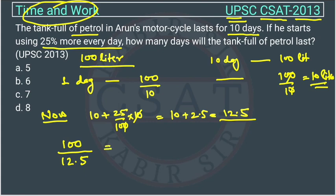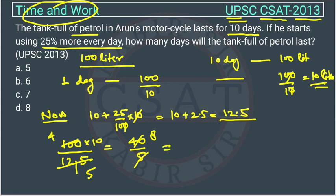You can calculate it like this, or you can write directly. From 100 divided by 12.5 — multiplying both by 2 gives 200 divided by 25. Then 25 times 4 is 100, and 4 times 10 is 40, giving us 40 divided by 5, which equals 8. So the answer will be option D, which is 8 days.